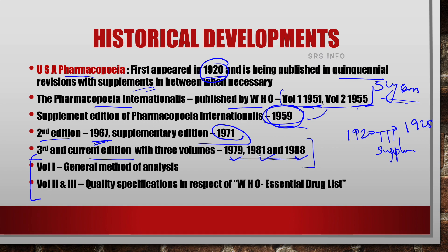These three volumes cover different topics. The first volume discusses the general methods of analysis of drugs. Volumes two and three discuss quality specifications — specifically the quality specifications in respect of the WHO essential drug list. Many drugs are included in the WHO essential drug list, meaning these drugs can be used in essential conditions worldwide. Based on these specifications, the second and third volumes of Pharmacopoeia Internationalis have been published.